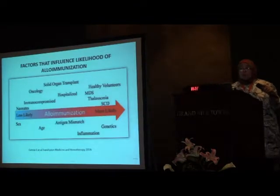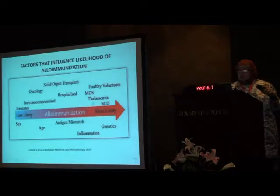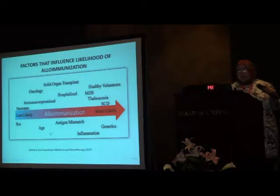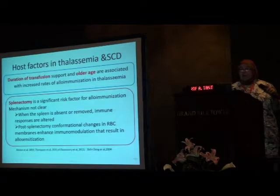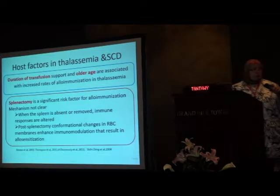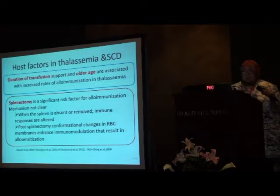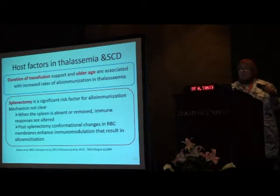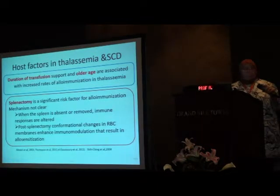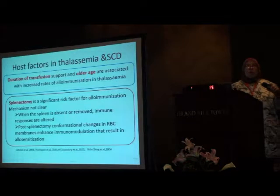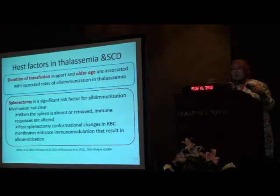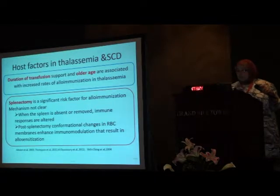Regarding recipient factors: thalassemics and sickle cell patients are more likely to develop alloimmunization. Genetic factors, inflammation, and age are all important. Studies reveal that duration of transfusion and older age are associated with increased risk. Splenectomy is also important — when the spleen is removed, there is alteration in immune responses, and conformational changes in red cell membranes make them more antigenic, resulting in enhanced immune modulation and allo-sensitization.